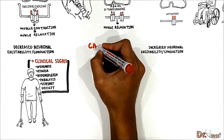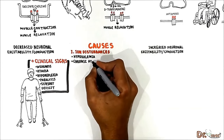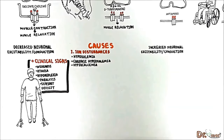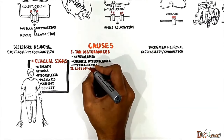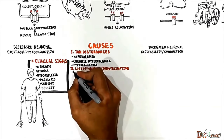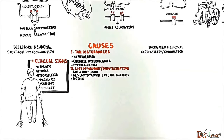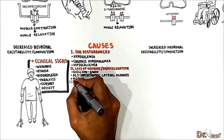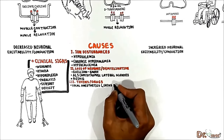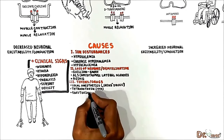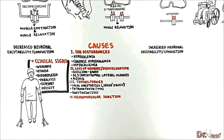The causes of decreased neuronal excitability include ion disturbances such as hypokalemia, chronic hyperkalemia, and hypercalcemia. A second possible cause includes loss of neurons and demyelination, as in the case of Guillain-Barré syndrome, amyotrophic lateral sclerosis (ALS), and normal physical aging. The third cause includes toxins and drugs like local anesthetics such as caine drugs, and toxins like tetrodotoxin and saxitoxin. Neuromuscular junction disorders, drugs, and toxins also decrease excitability at the neuromuscular junction.